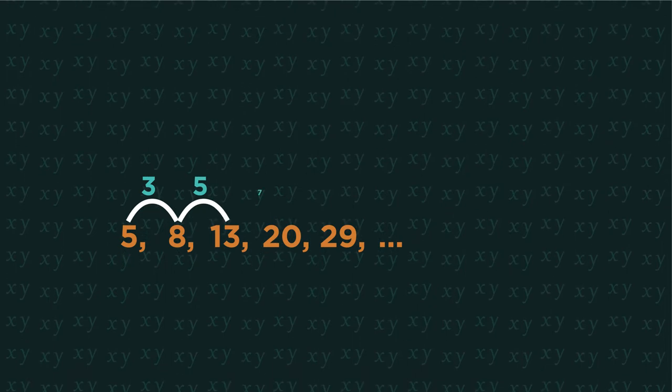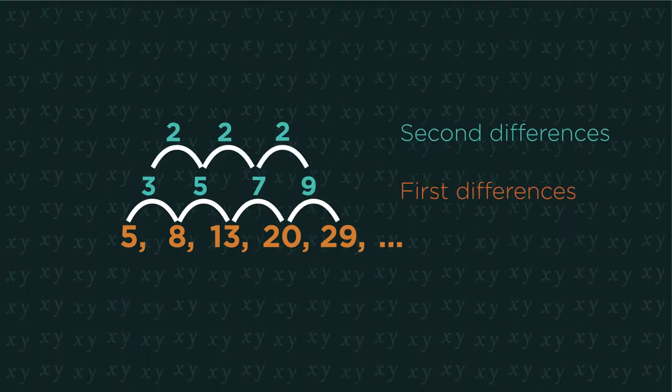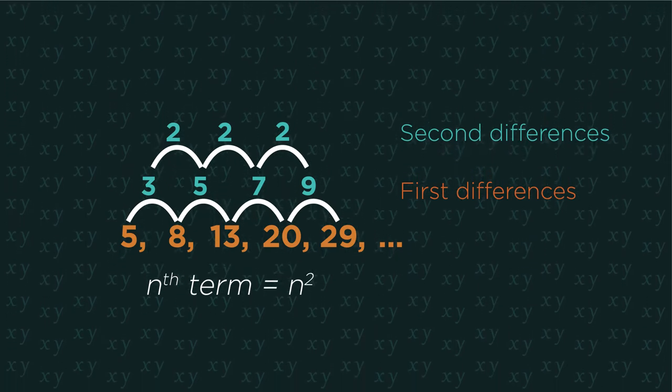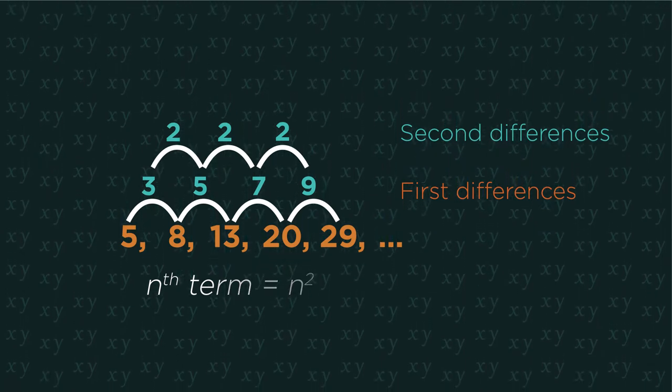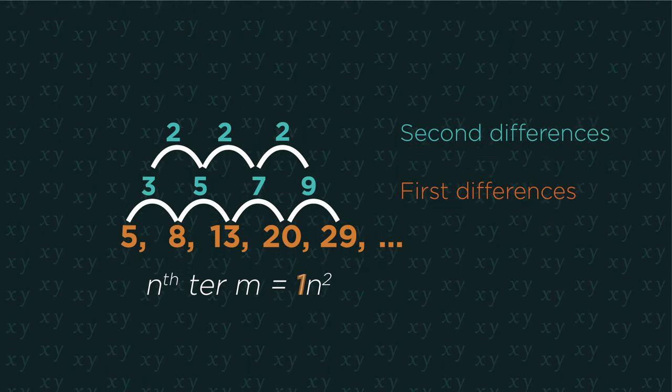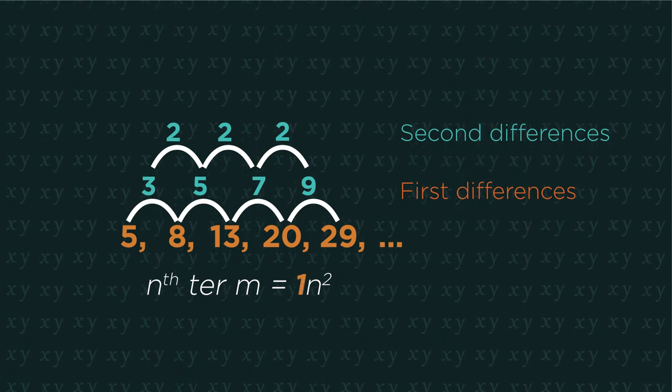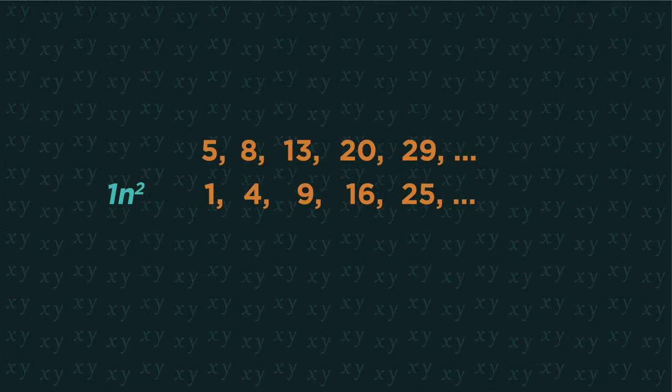We have this sequence. Find the first and second differences. There's a constant second difference, so it's going to be n squared. Because the second difference is 2, it will be 1n squared. Always half the second difference. Now write out the original sequence and the 1n squared underneath it.